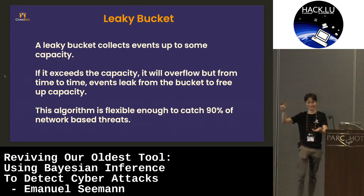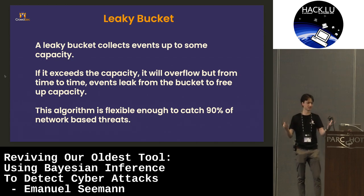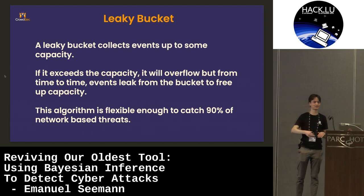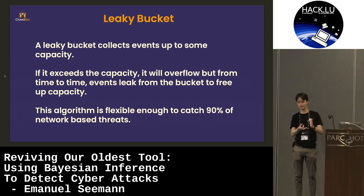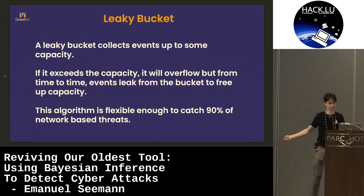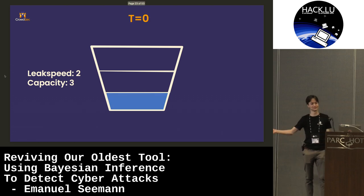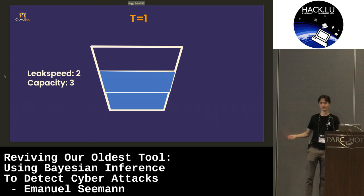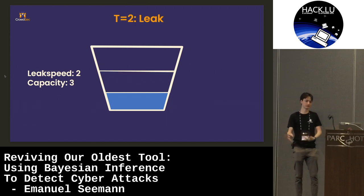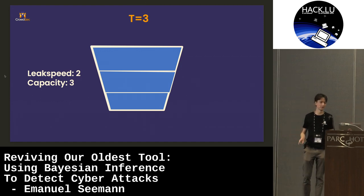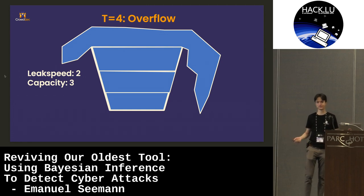So how does CrowdSec work? CrowdSec reads logs, parses them into events and then fills these events — which is the internal format — into leaky buckets. A leaky bucket is an algorithm we use to detect a whole bunch of different behaviors. A leaky bucket is a bucket that collects events. If the capacity of the bucket is exceeded, it will overflow and this generates an alert. And it is leaky, so over time events will leak from the bucket. For instance, this can be used for a password brute force — some guy tries, and every time he fails a login it goes into the bucket, and if he fails too many logins in too short a time, he goes to jail. In pictures: the bucket has a leak speed of two and capacity of three. At T0 an event comes in, we fill it. At T1 another event, we fill it. At T2 there's the leak, one event goes out. At T3 we have two more events, the bucket is full, and at T4 another event arrives and it overflows — we have our alert.